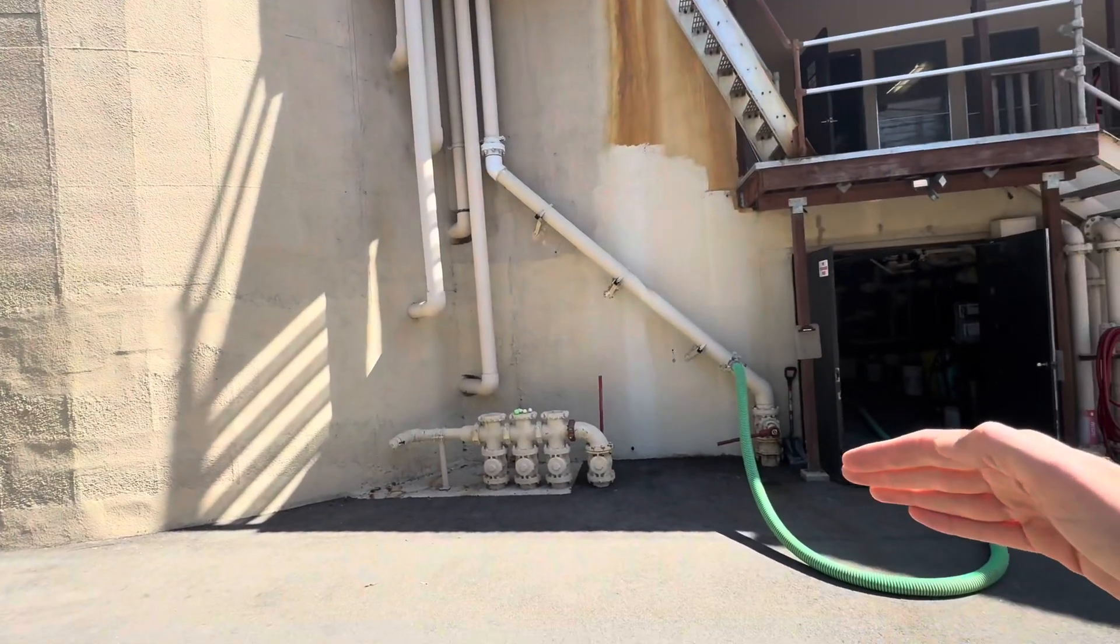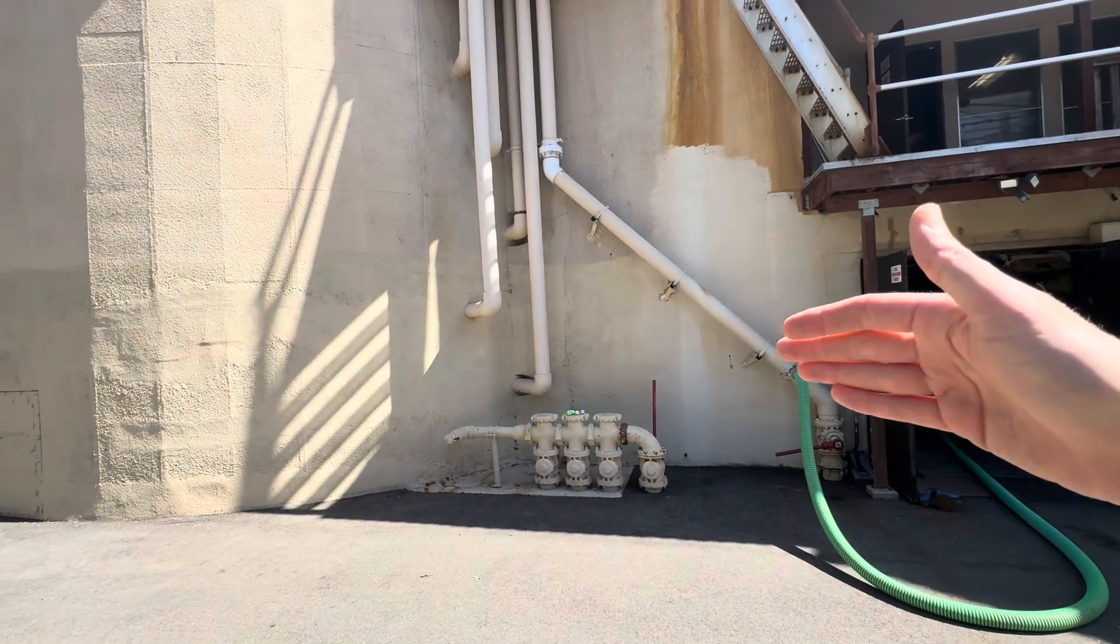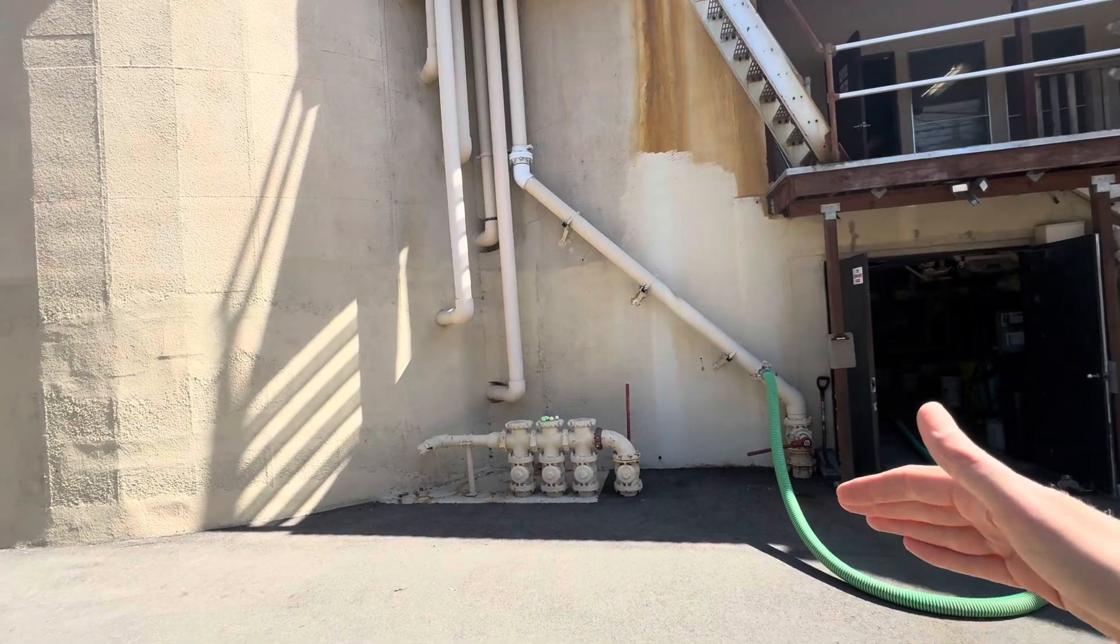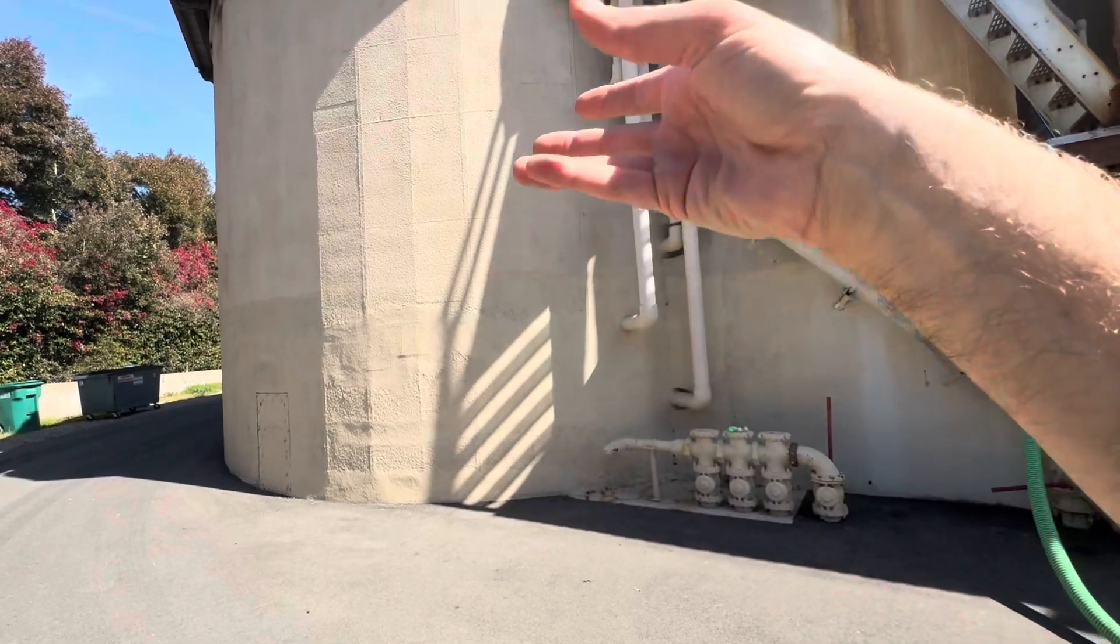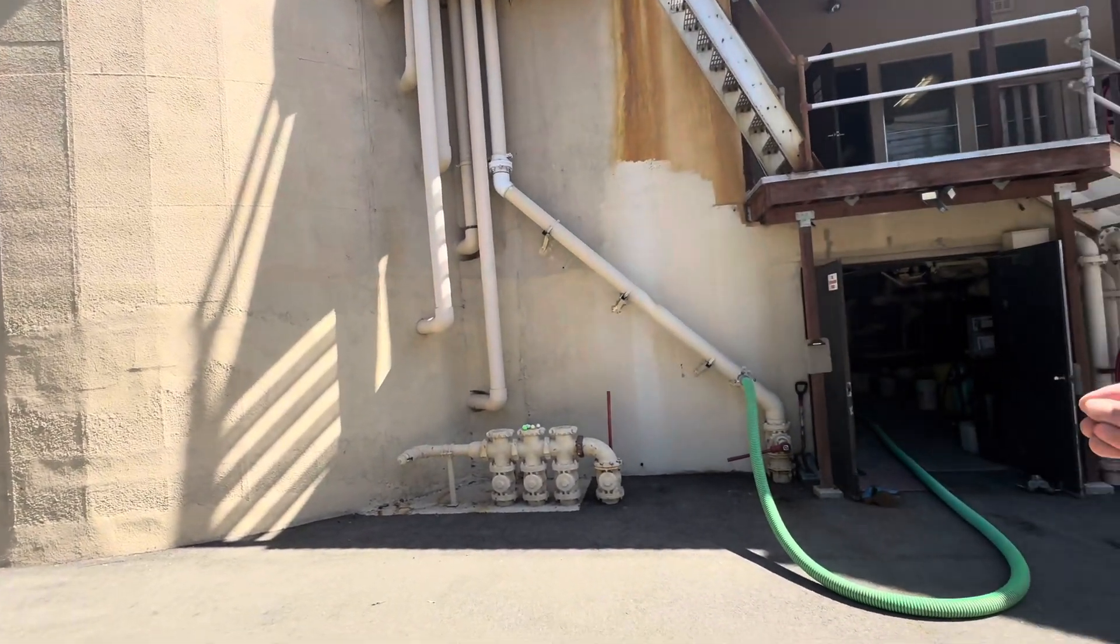And so this returns that less thick liquid. I won't call it clear, but it's turbid, but it's got a BOD load, but it puts it back to the front of the plant. So you're exchanging a thick sludge for a thinner water that's turbid and needs treatment, if that makes sense.